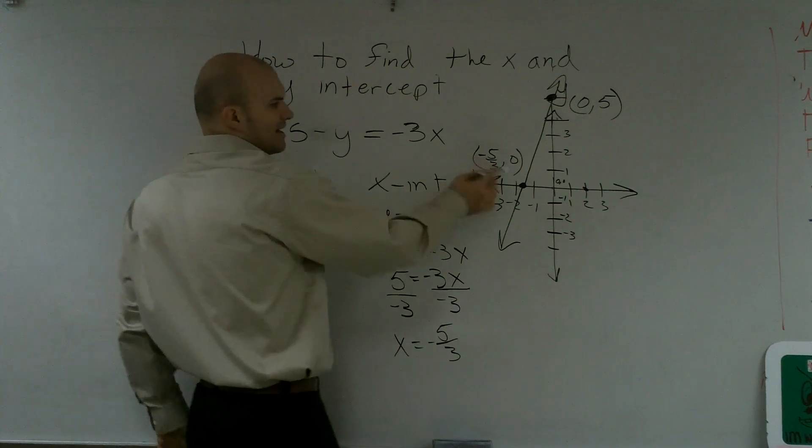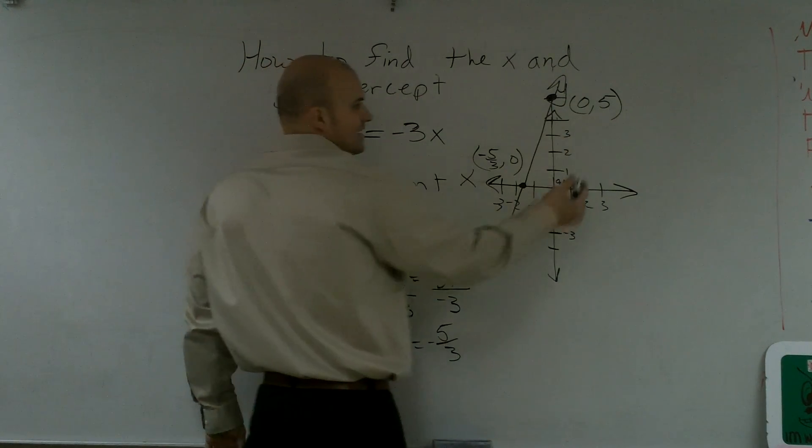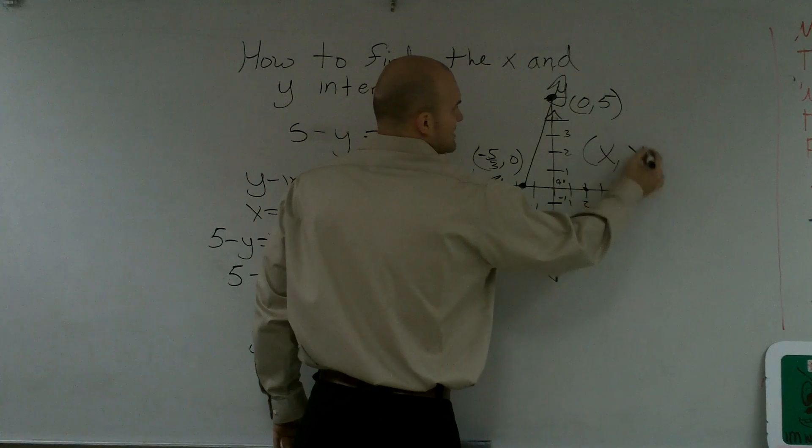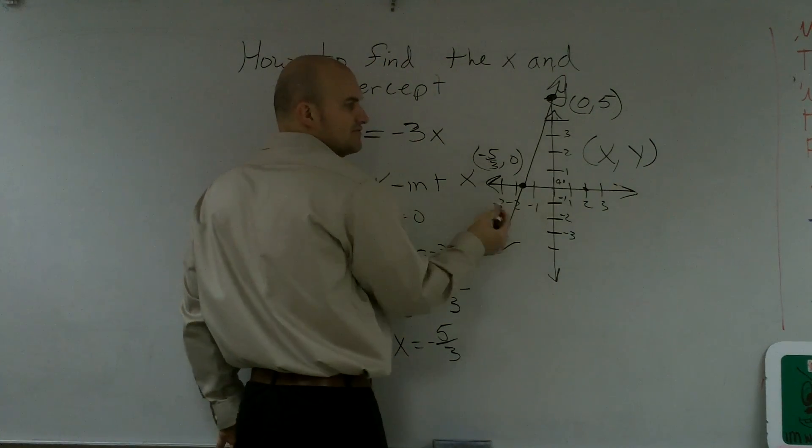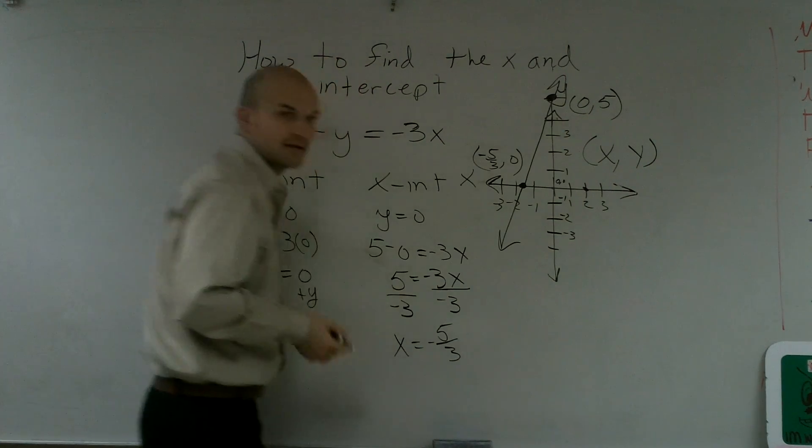Okay? And just real quick, why was this one in front and this one's behind? Because when we're writing a point, we write it as xy. Your x-coordinate goes first and then your y-coordinate goes second. Alright? So that's how you find the x and y-intercept of a given equation.